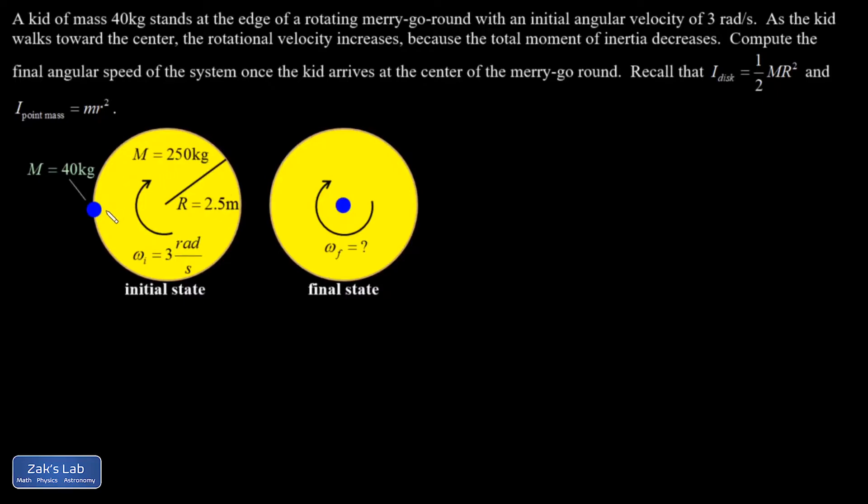And as this kid makes his way to the center, well, that's more mass going closer to the center of rotation, and that causes the moment of inertia to go down. For angular momentum to be conserved, the rotation rate must go up. So we're going to try to find that final angular velocity when the kid arrives at the center.